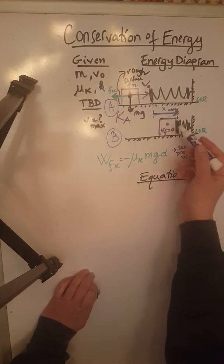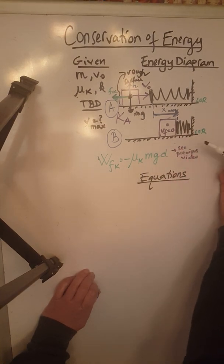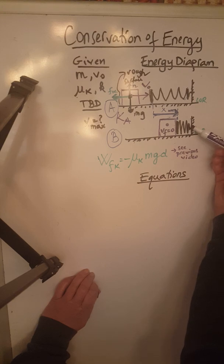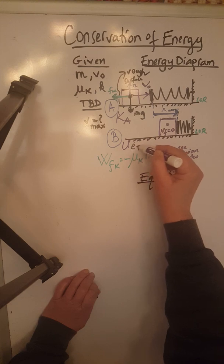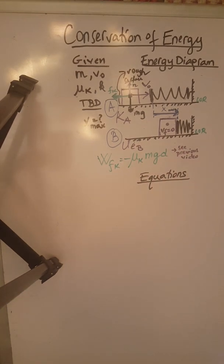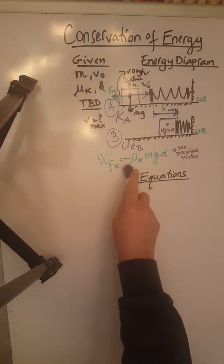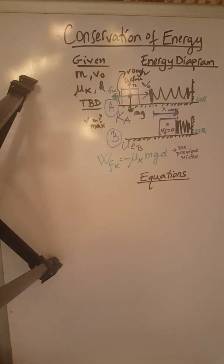At B the object has stopped and the only energy that the system has is the elastic potential energy due to the compression of the spring. So at B we only have UEB. We set those equal to each other but we also consider the absolute value of the work done by the force of friction.